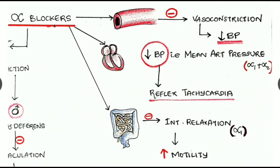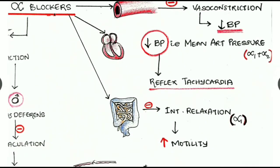The effect of alpha blockers in the gut or intestine: they inhibit the smooth muscles in the intestine, resulting in inhibition of intestinal relaxation. They act more especially on alpha-1 receptors.